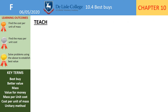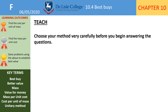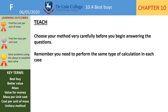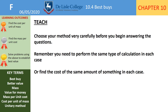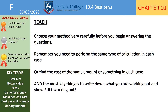There are four things to think about when working through these questions. First, decide what calculation you're going to do before you begin. Second, perform the same type of calculation in each case. Third, you may need to change units — if one is in grams and another in kilograms, convert them first. Or you might find the cost of the same amount of each, like we found 12 litres. Finally, write down and show full working out — that's the only way to get all the marks.